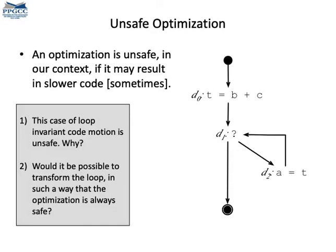In this case, the optimized program is not always faster. Imagine that the loop does not execute. In this case, we would have to run the hoisted statement anyway, even if we did not enter the body of the loop. So this optimization is not performance safe. But would it be possible to modify the loop so that we obtain performance safety?